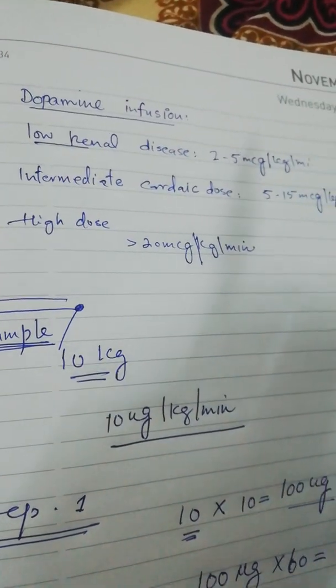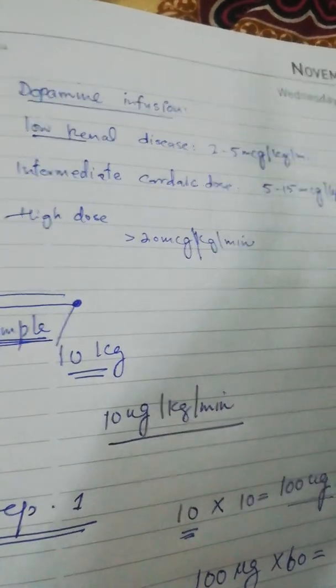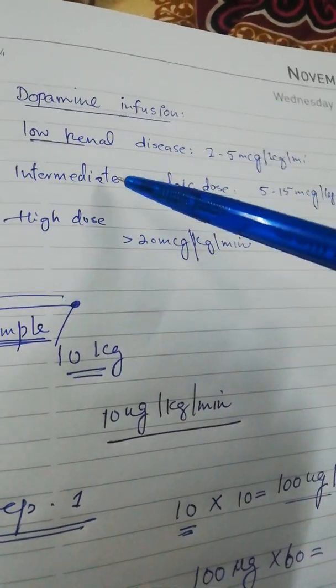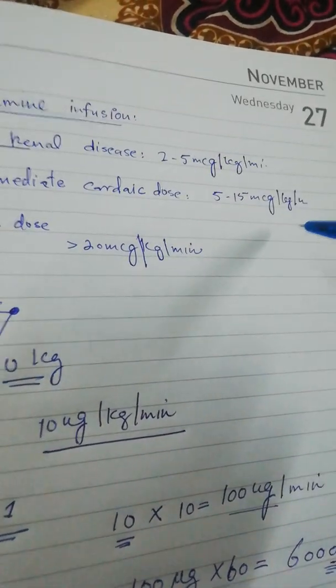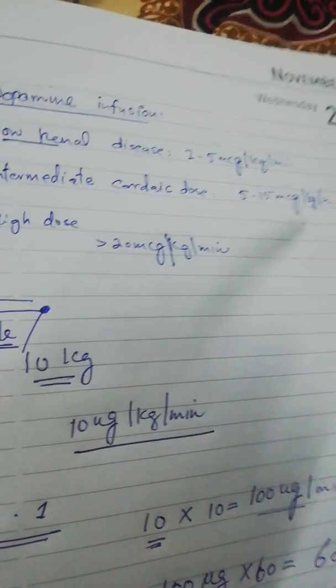We have a low renal dopamine dose which is 2.5 to 5 microgram per kg per minute. We have an intermediate cardiac dose that is 5 to 15 microgram per kg per minute.